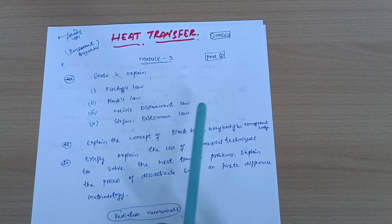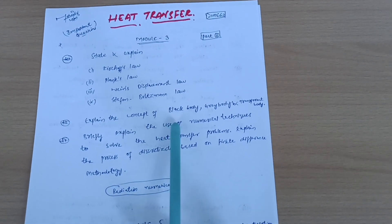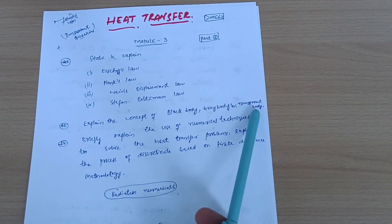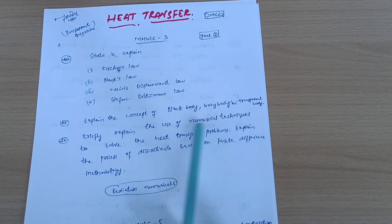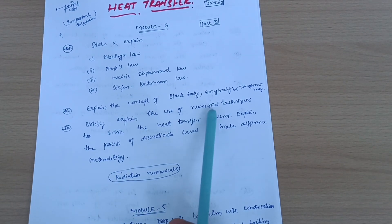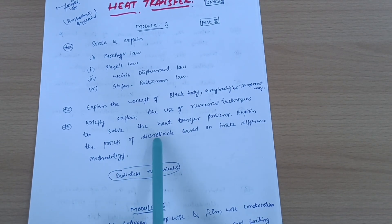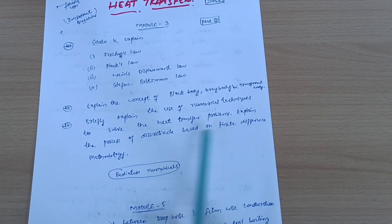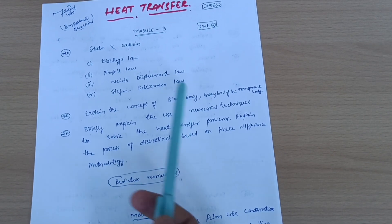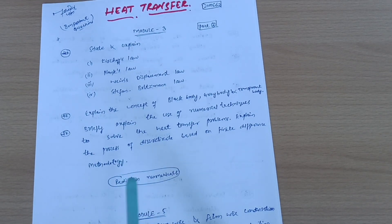Explain the concept of black body, gray body, and transparent body - small definitions they will ask. Briefly explain the use of numerical techniques to solve heat transfer problems. Explain the process of discretization based on finite difference methodology.